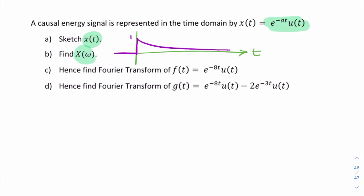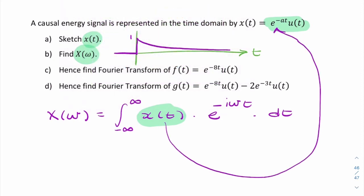Second part is to find X of omega. So here it's directly asking for the frequency domain representation. So that means the Fourier transform. So we're trying to find X of omega. The definition of the Fourier transform is an integration across all time of X of t times e to the minus i omega t dt. So all we need to do is replace X of t with that and then carry out the integration.